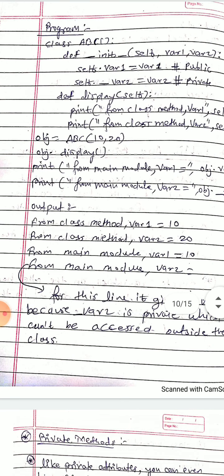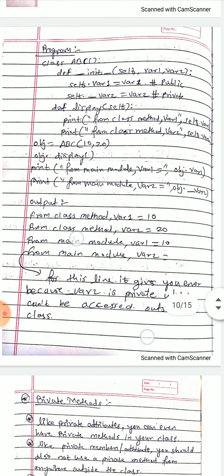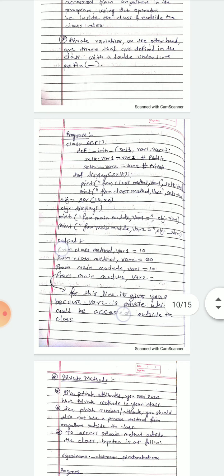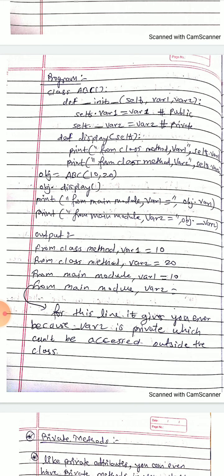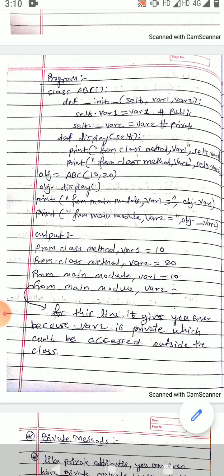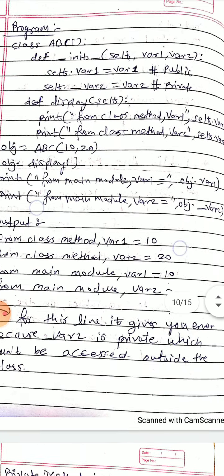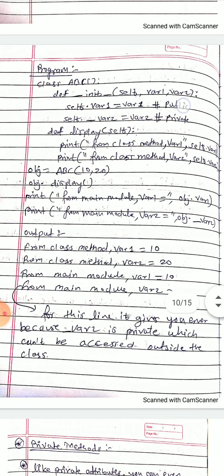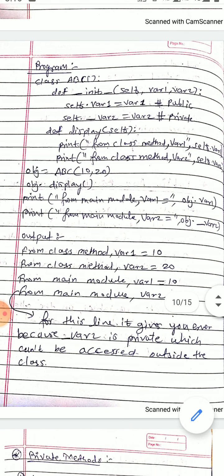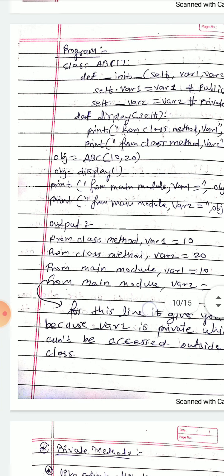But for the main module, accessing var2 gives an error, because __var2 is a private member which cannot be accessed outside the class. We defined it as self.__var2 = var2 inside the class, and when we try to print it outside the class using obj.__var2, it gives an error. That is not the case with var1 because var1 is public and can be accessed outside the class. That is why we get the answer from the main module: var1 is equal to 10. Thank you.